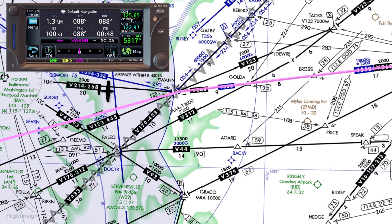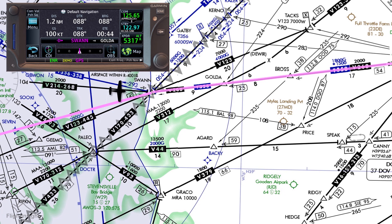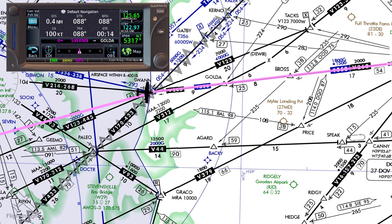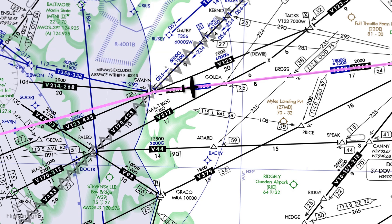As we approach Swan, the 650 will perform turn anticipation. All these fixes are fly-by waypoints, not fly-over. The GPS takes our ground speed — 100 knots — and the degree of turn needed, then computes when to start a standard rate turn in order to roll out right on course to the next waypoint, Golda. In the bottom right it counts us down to our turn, and when it hits zero we can start. After the turn, the leg to Golda is now active as it's now shown in pink. We'll continue navigating like that along the rest of the airway.